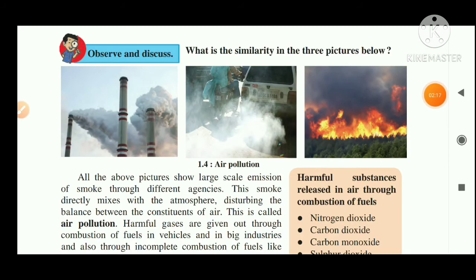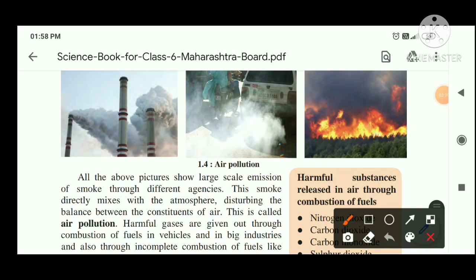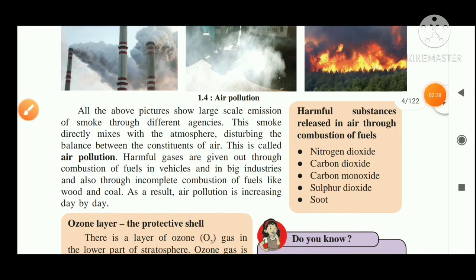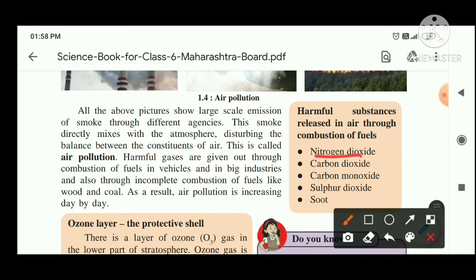What is the similarity in these pictures? These three pictures show a large amount of air pollution. How does this air pollution occur? The harmful elements like nitrogen dioxide, carbon monoxide, sulfur dioxide, and soot all mix as smoke into the air, and this is called air pollution. These are very harmful for us, and air pollution is increasing day by day.